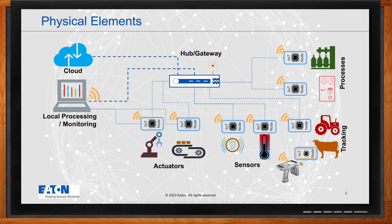In many IoT deployments, the focus is on automatic data collection and processing with minimal human intervention. However, there are exceptions where human interaction is required, such as livestock tracking and monitoring, where nodes or sensors may be passive. Ensuring the security of communication links is essential — techniques such as encryption, obfuscation, frequency hopping for wireless communication, and other security mechanisms help protect data and ensure confidentiality, integrity, and availability.